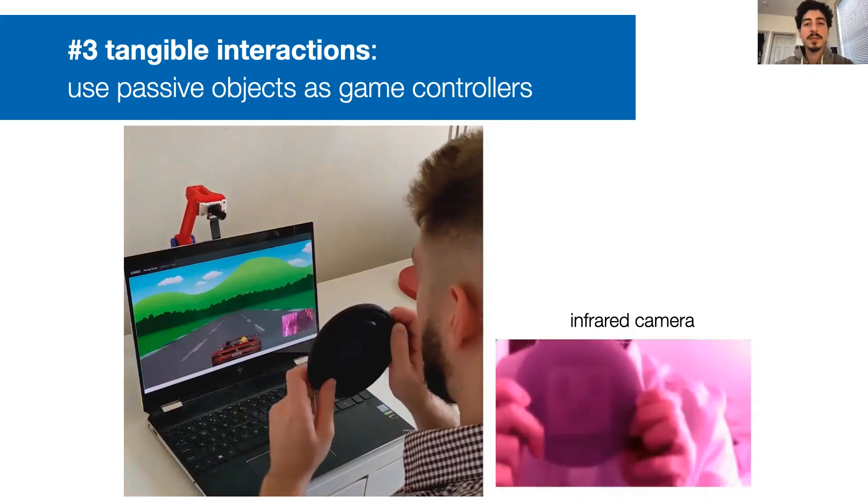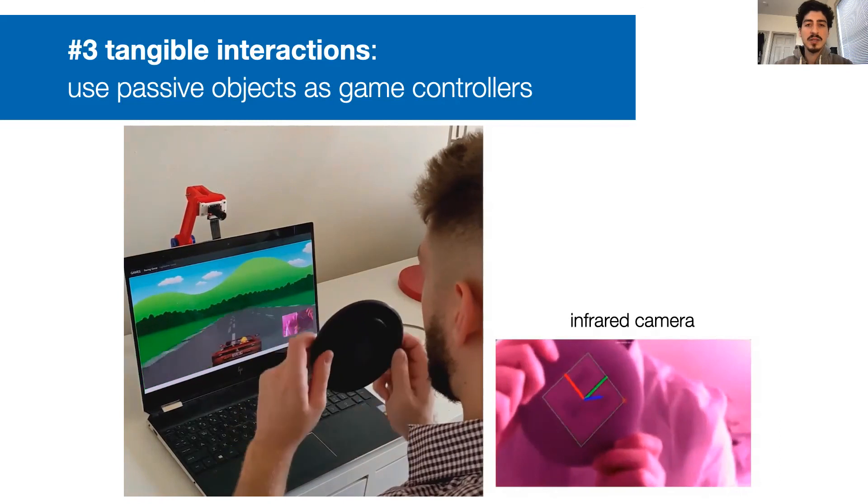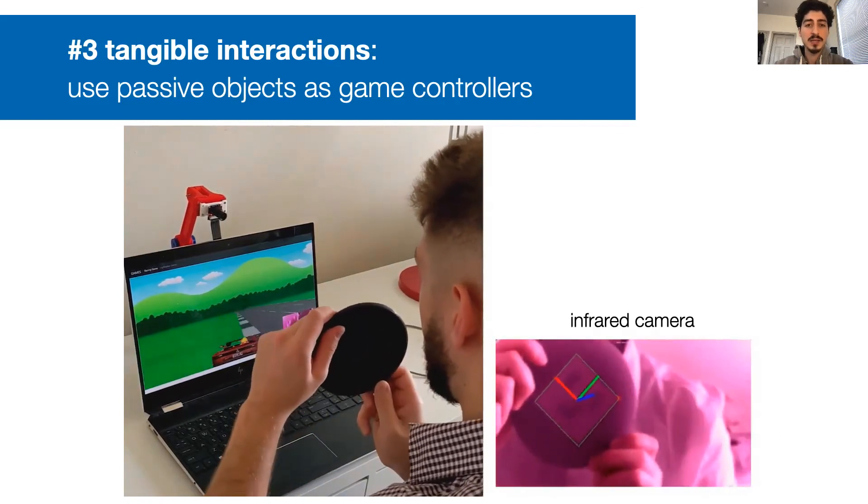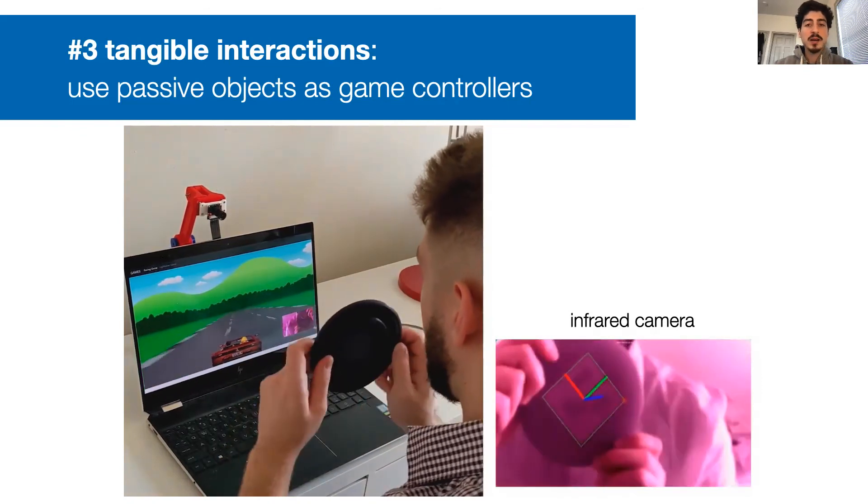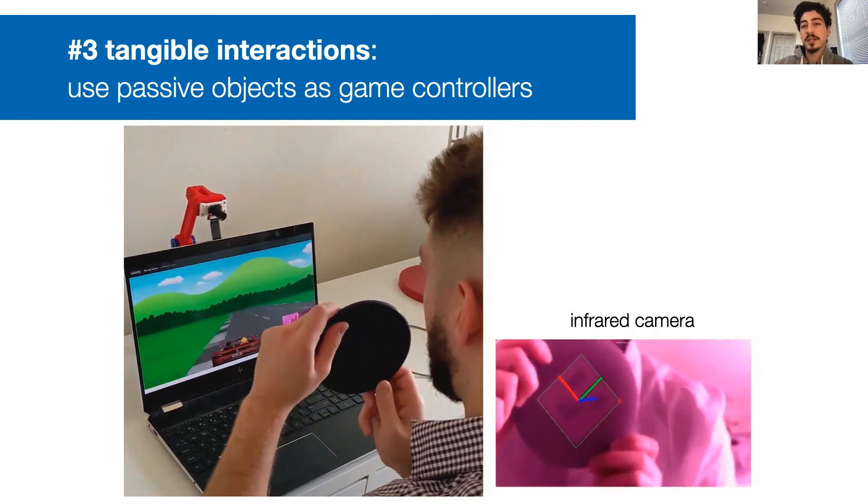In our final use case, you see how this plastic desk, which doesn't have any electronics in it, is used as a game controller. Even though the wheel is rotationally symmetric, the IR camera can see the fiducial marker inside and infer its orientation.